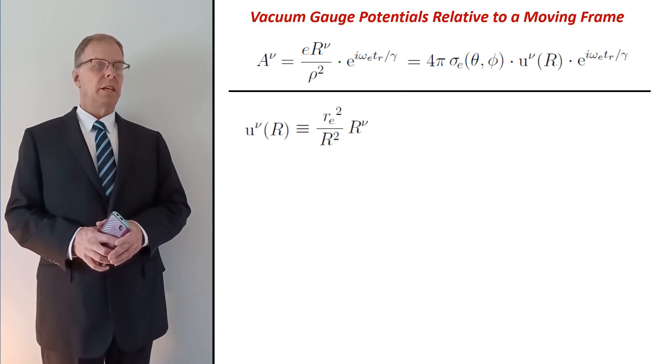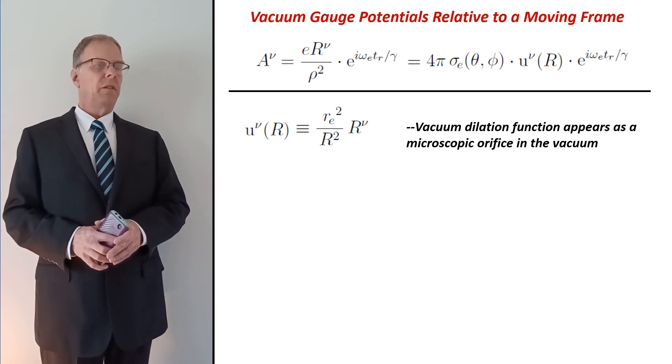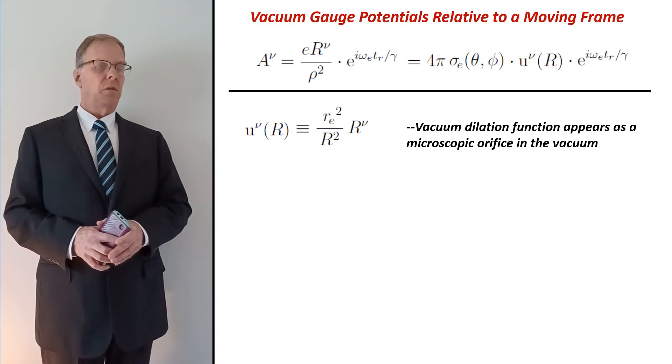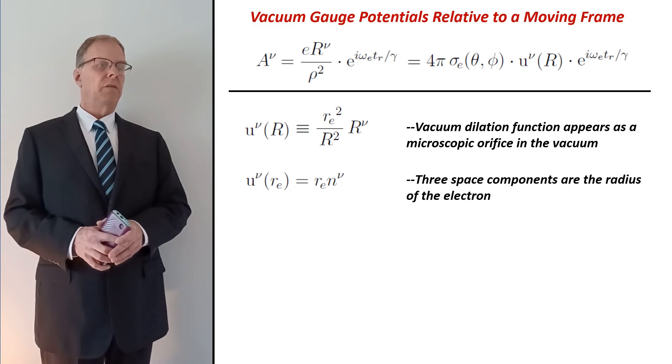The function u nu is the moving frame dilatation function. It only depends on the radial distance r, and describes a microscopic orifice in the vacuum allowing for the inflow of radiated field energy. This vector is not a distortion of space-time. Instead, it's a radial dilatation of a medium that's defined on top of Minkowski space. It can be evaluated at the retarded distance, r is equal to r sub e, where the space-like or space components become the radius vector of the electron.